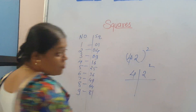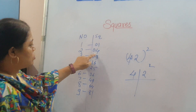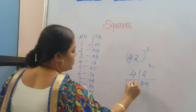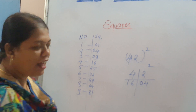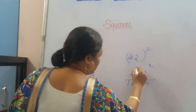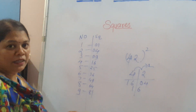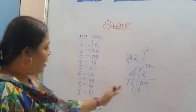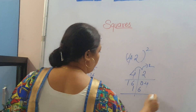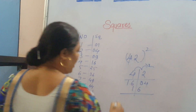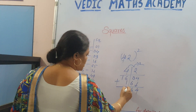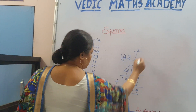For 42, we need the square of 2 and the square of 4. Square of 2 is 04. Square of 4 is 16. Now, 4 doubled is 8, and 8 doubled gives 16. We place one number on one side and the other number on the other side. Then we do addition: 0 plus 6 is 6; 6 and 1 makes 7. Then 1 remains as it is.